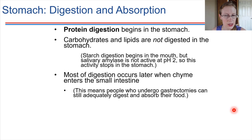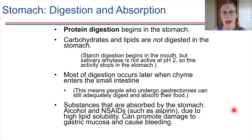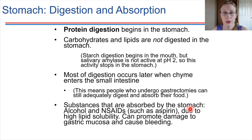The one thing that is absorbed by the stomach is molecules with high lipid solubility. That includes things like alcohol and some drugs — non-steroidal anti-inflammatory drugs like aspirin and ibuprofen. These substances can be absorbed through the stomach, and this can end up leading to damage of the stomach lining, including bleeding if used long term. That's why it's important to use them in limited amounts.